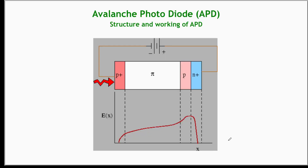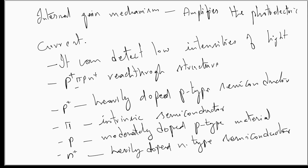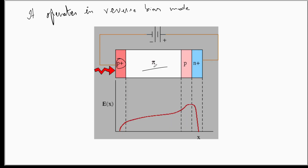In summary, we have seen the avalanche photodiode structure and working. The unique mechanism by which the APD works is called the internal gain mechanism, which amplifies the photoelectric current. Because of this internal gain mechanism, these diodes can be operated even at low intensities of light. The structure is called the p-plus pi p n-plus reach-through structure, consisting of four different semiconductors: a heavily doped p-plus layer, a lightly doped intrinsic semiconductor, a moderately doped p-type semiconductor, and a heavily doped n-type semiconductor. The device is operated in reverse bias condition, under which the depletion layer across the p n-plus junction spreads over the entire pi region.